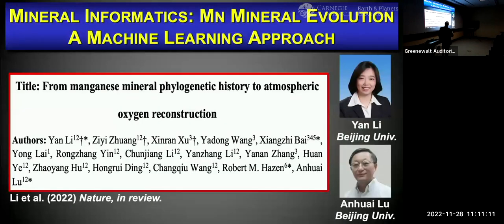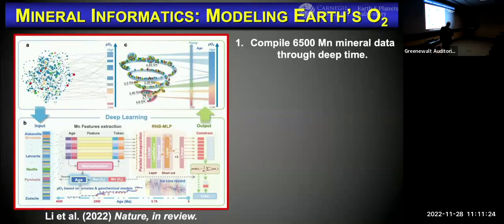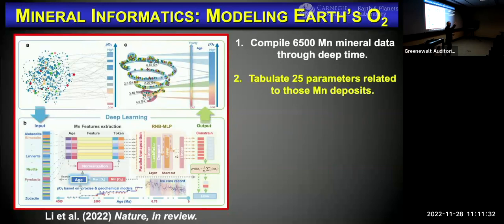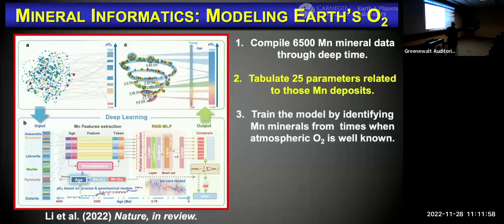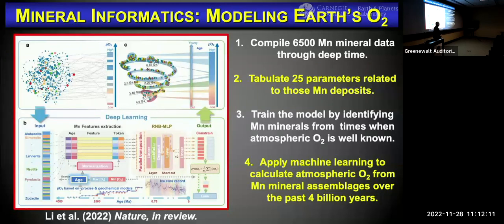In a paper now submitted to Nature and in review, colleagues at Beijing University compiled the 6,500 manganese mineral occurrences from the mineral evolution database, then tabulated 25 additional attributes for each: not only the oxidation states of manganese but also the oxidation states of other elements, the mineral species present, crystallographic parameters, and tectonic information of the localities. Some attributes may not seem related to oxygen at all, but you use all of them. You train the model by identifying periods of time when atmospheric oxygen is pretty well constrained, and then apply machine learning to the full 6,500 to come up with a new model.